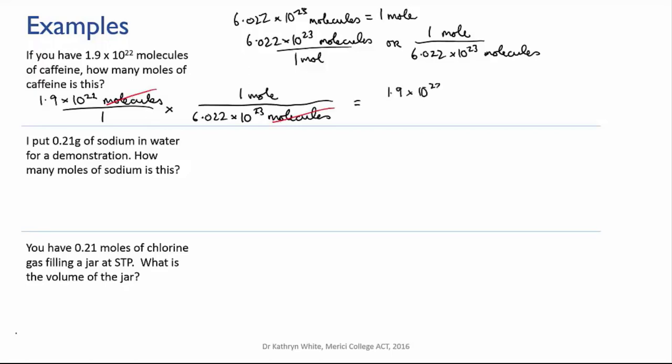When we run through the calculation, it looks like this. And the answer it gives us is 0.03155 moles. Now, we should check significant figures. If we look back, we find that the number of molecules we were given at the start of the problem has two significant figures, the 1.9. So we need to round our final answer to two sig figs as well.